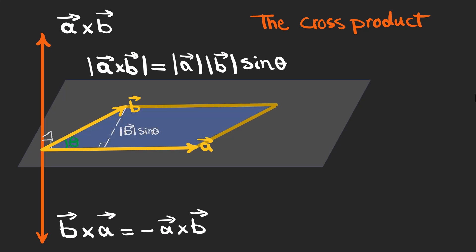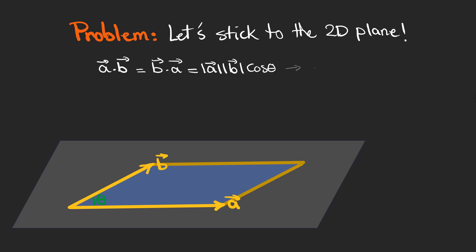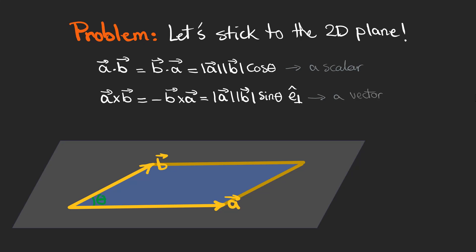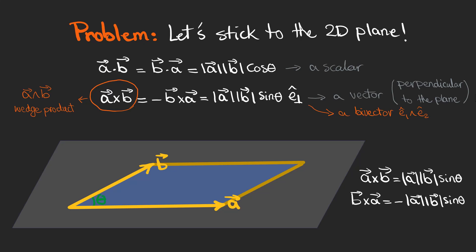Now look at this parallelogram formed by vectors a and b. The area of this shape is equal to the magnitude of the cross product. The problem with the cross product is that it lives in 3D, but we want to stick to the 2D plane because complex numbers are in a 2D plane. We don't have any problem with the dot product because it's a scalar. But the cross product is a vector perpendicular to the 2D plane. In another video I'm going to talk about wedge products, which is related to this blue area — a bivector. But for now we are going to stick to the cross product and the 2D plane and forget about the perpendicular component.